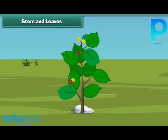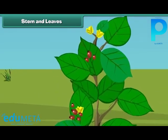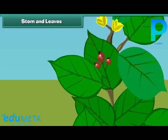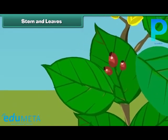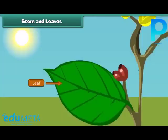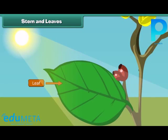Friends, do you know which part of the plant helps it to prepare food? That's right — it is the leaves. Leaves are green in color and are born out of a stem.